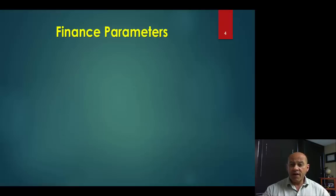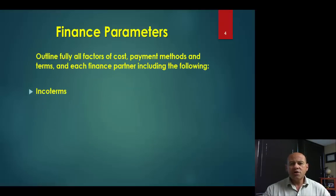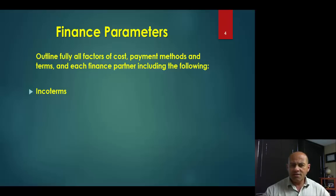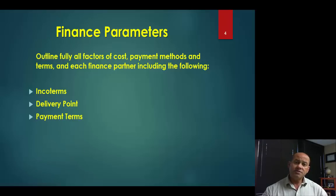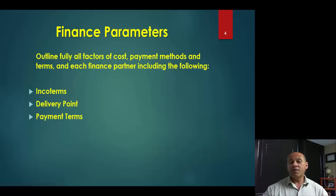Next, it's important to establish finance parameters. Finance parameters are elements like Incoterms — three letter codes that describe the responsibility of an international seller to an international buyer. They appear on many contracts and are very critical to understanding the timing, risk, and responsibility we have as international exporters and importers. Along with that is establishing the delivery point: at which point is the seller delivering the goods to the international buyer? And finally, what payment methods are we going to apply — open accounts, cash against documents, letters of credit. We'll talk about the four main payment methods as well as consignments.